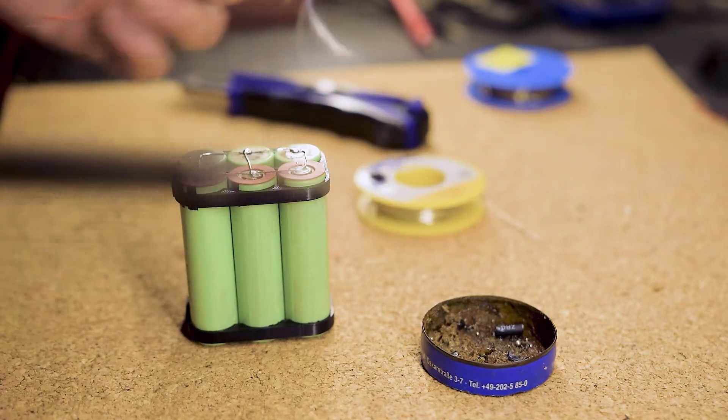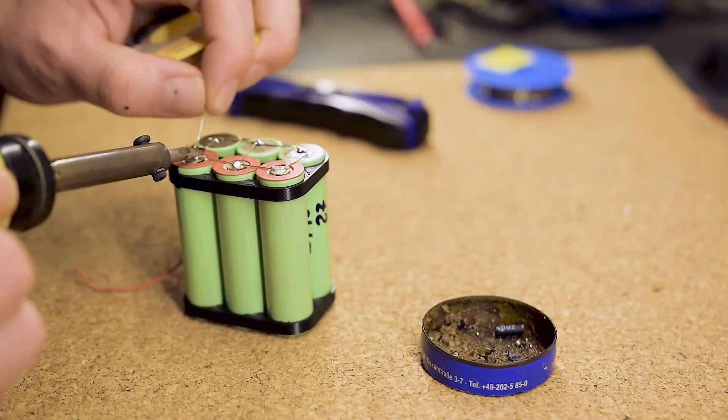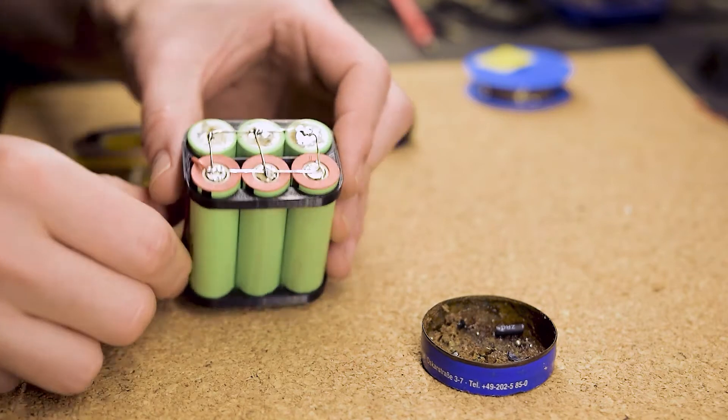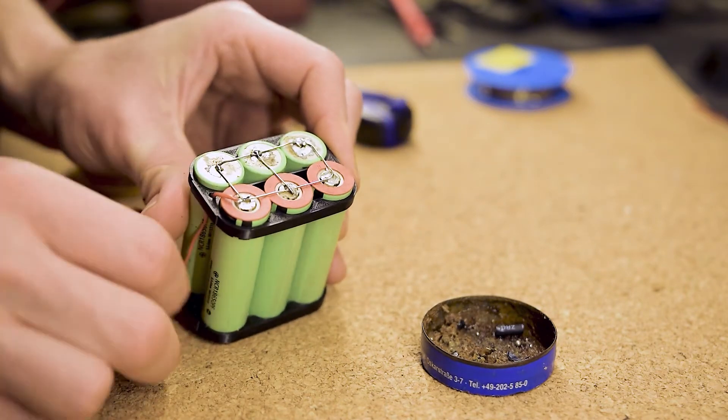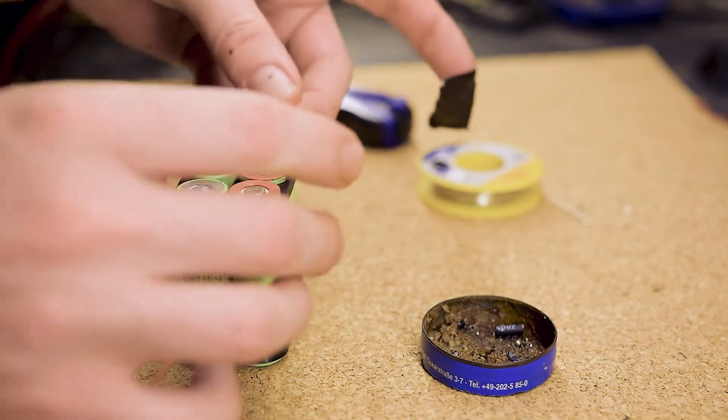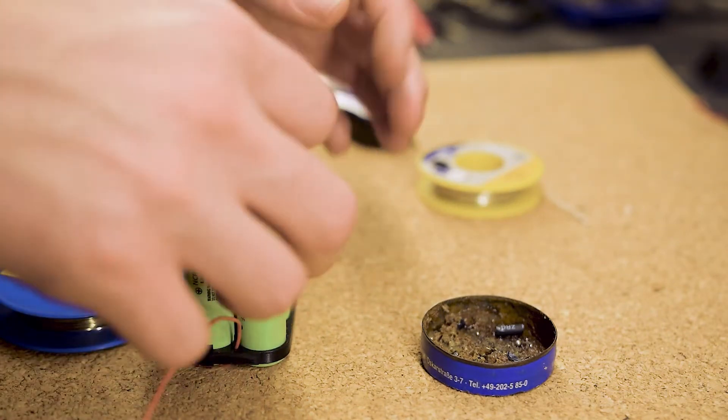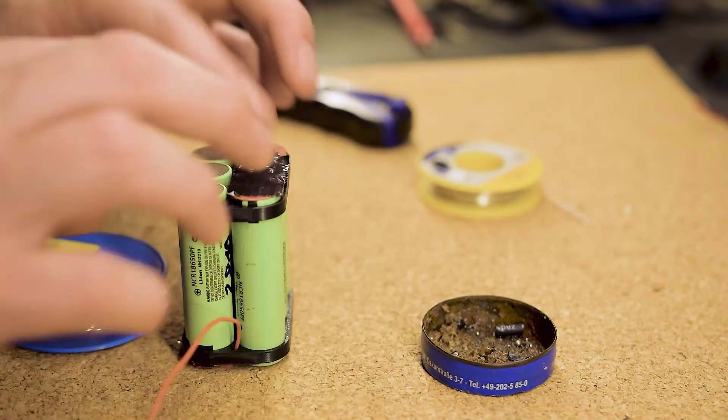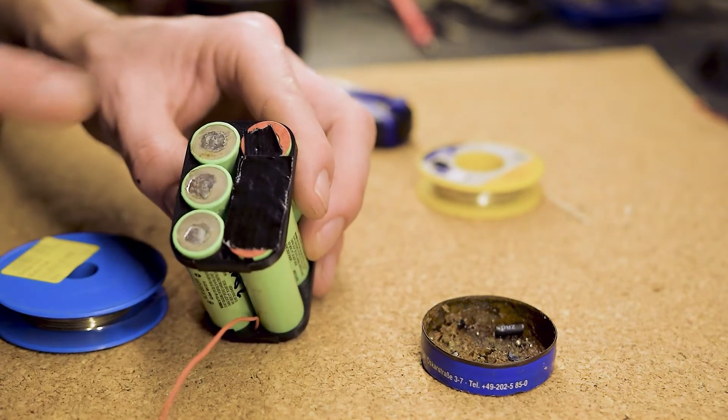Now we need to solder the cable that allows the BMS to access the individual packs. It is required to balance the cell packs against each other. After that is done, we isolate all the positive contacts with gaffer tape, just to make sure that short circuiting is as hard as possible.